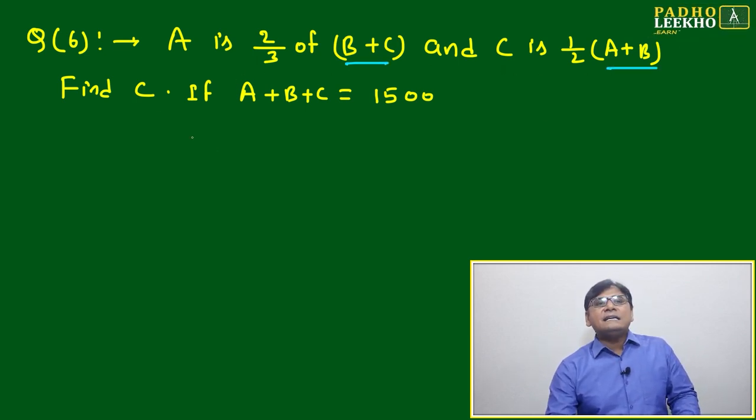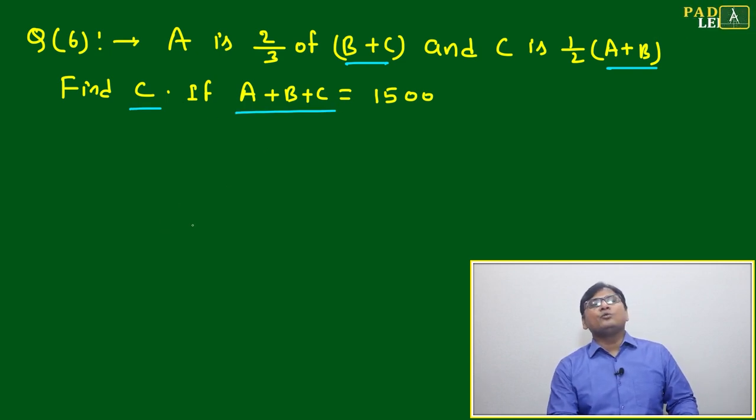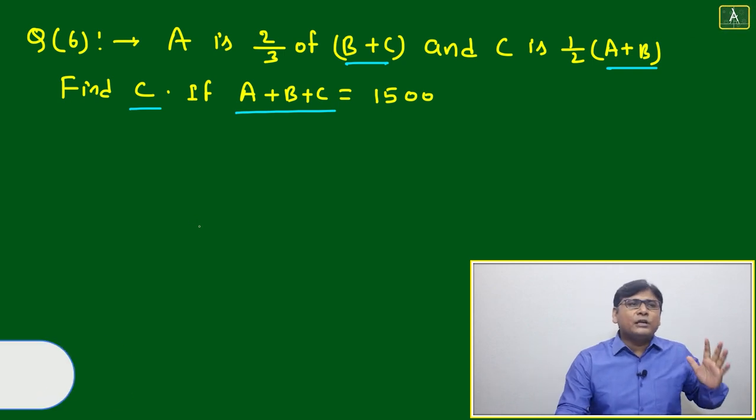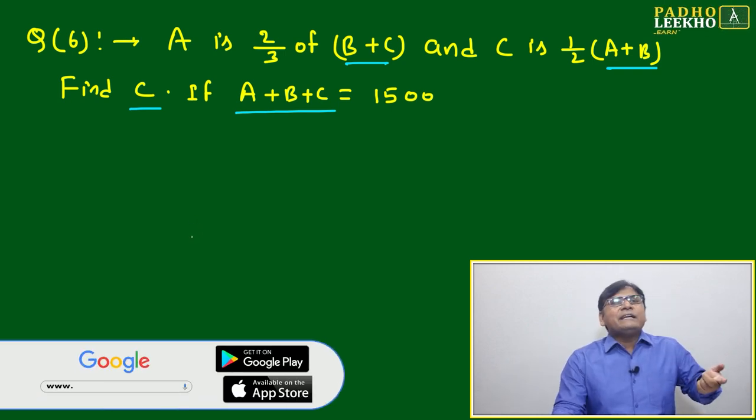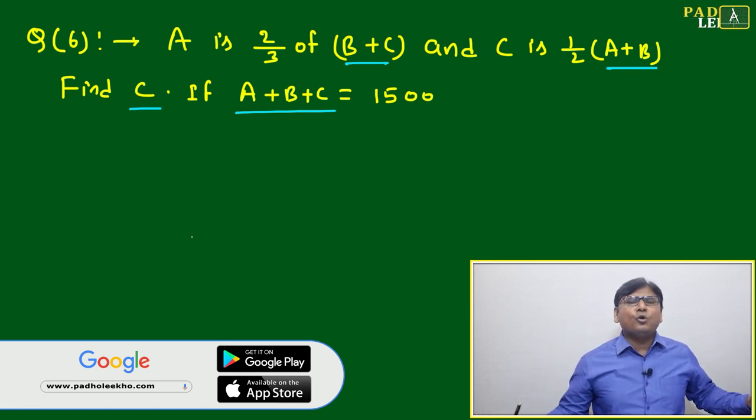Here A is 2/3 of B plus C, and C is half of A plus B. Find C. The condition is A plus B plus C equals 1500. If sum is given, it's a thumb rule - keep it in your mind - anywhere in ratio problems, if sum is given, the question is going to become easy.